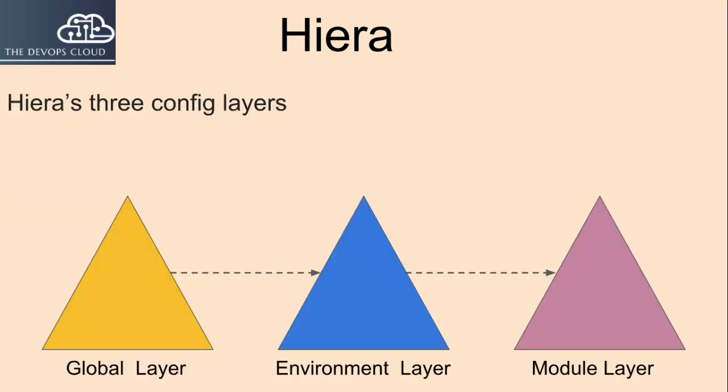Hiera's three config layers. Hiera uses three independent layers of configuration. Each layer has its own hierarchy, and they're linked into one super-hierarchy before doing a lookup. The three layers are searched in the following order: global, environment, module.